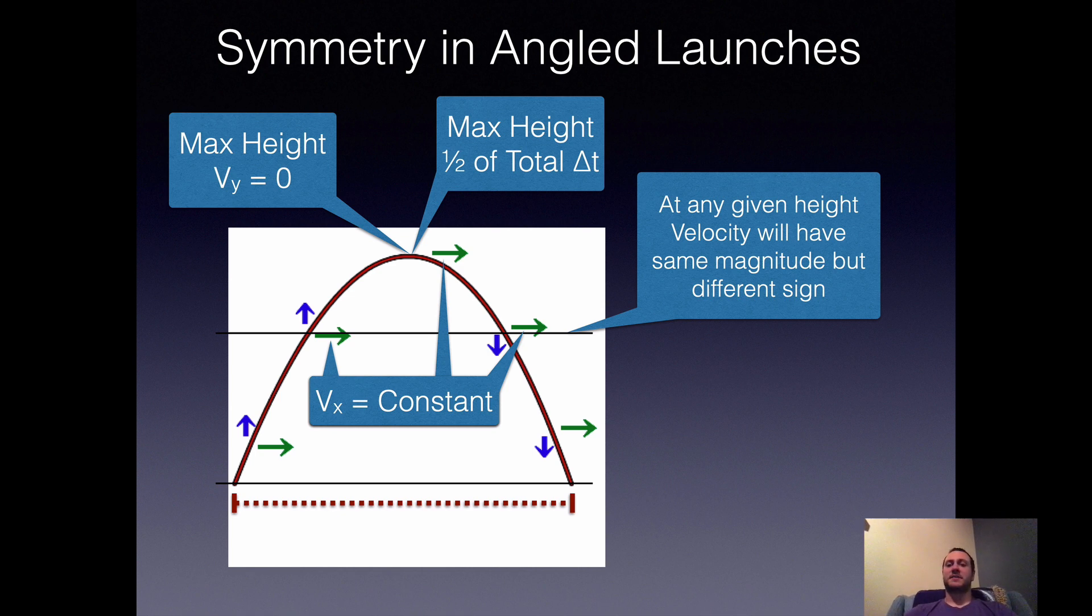At any given height, if we're on the way up and you look at those vectors, vertical velocity is pointing up, horizontal velocity is pointing to the right. On the way back down at the exact same height, the projectile is moving downward at equal speed but different direction. So the velocity is technically different. Velocity is the same magnitude, so it's moving at the same speed but different sign. Moving up on the left, moving down on the right in this diagram.